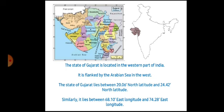The state of Gujarat is located in the western part of India. It is flanked by the Arabian Sea. 'Flanked' means surrounded, or to be on each side of something. The state of Gujarat lies between 20.06° north latitude and 24.42° north latitude, and between 68.10° east longitude and 74.28° east longitude.